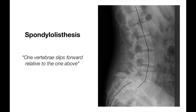Spondylolisthesis is where one of the vertebrae slips forward relative to the one that normally sits below it. The L5 vertebra is the one most commonly involved. Patients may complain of lower back pain that's worse on standing, and the pain may also radiate to their buttocks. On examination, you might see an increase in the normal lumbar lordosis, and on palpation of the spine you may be able to feel a displacement of the affected vertebra. To help diagnose spondylolisthesis, you should do a lateral plane X-ray of the spine; an MRI or CT would also be useful in determining the extent of spinal canal narrowing.